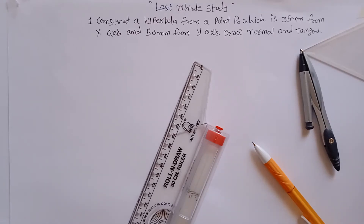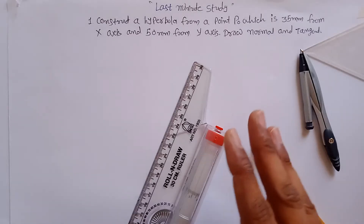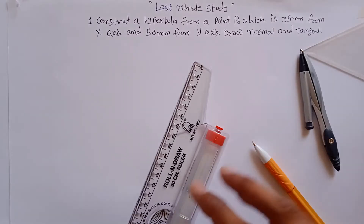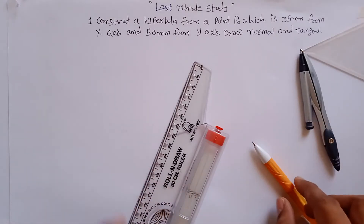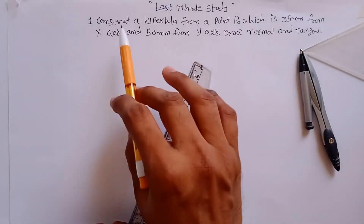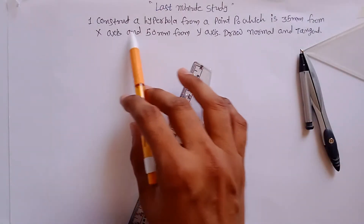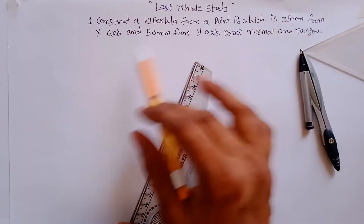Problem number one from engineering drawing: construction of a hyperbola by using the rectangle method. In the problem statement they will not mention the name of the method, but this method is called the rectangle method. To construct a hyperbola, you have to construct it from point P0.